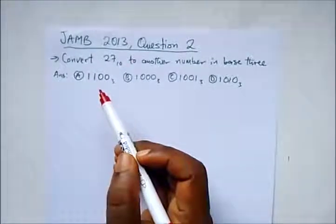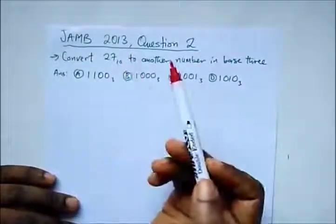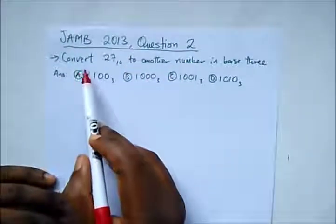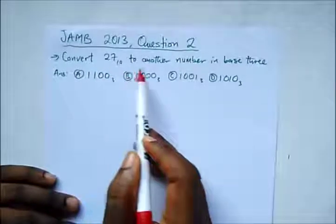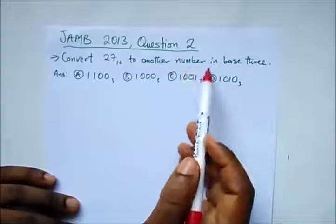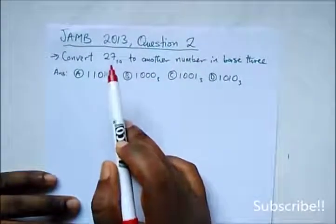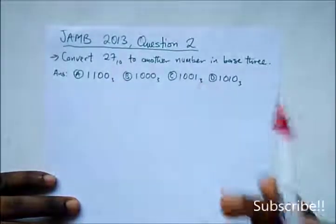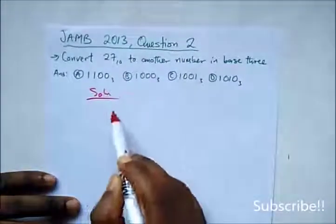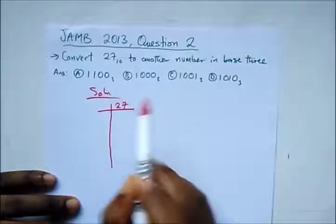Here we have a question from JAMB 2013, question 2. It says convert 27 base 10 to another number in base 3. It's simply saying convert 27 base 10 to a number in base 3. How do we do this? We divide 27 by 3.